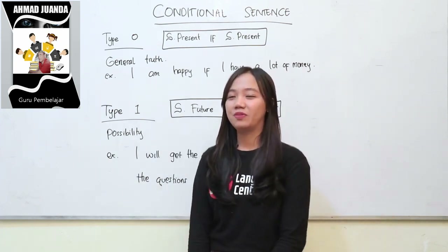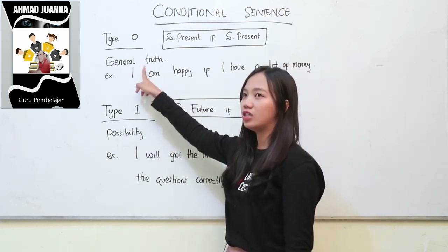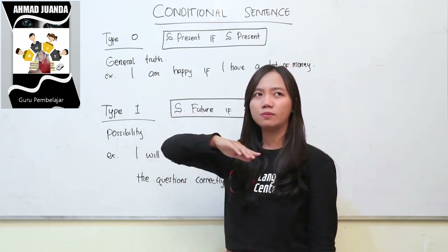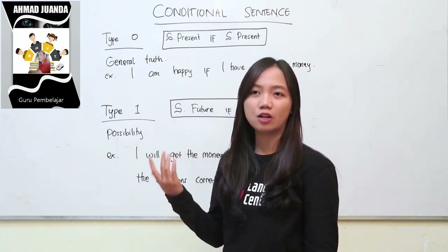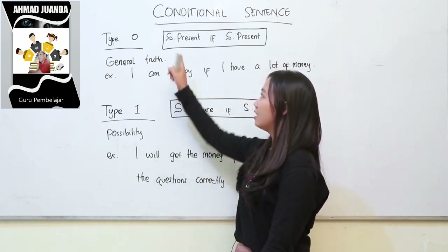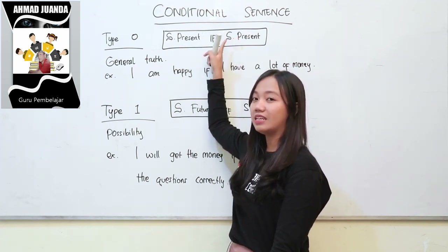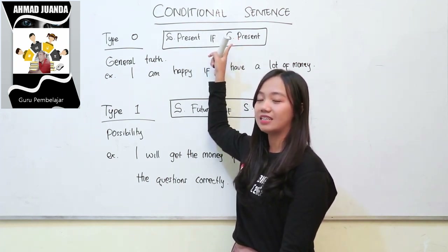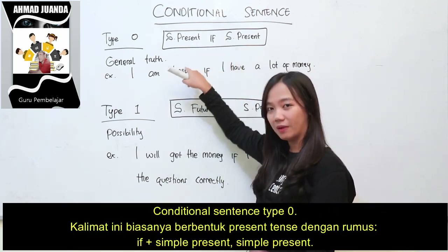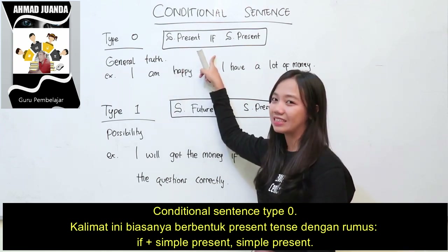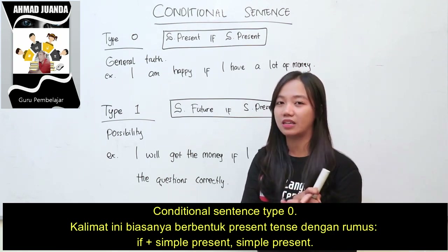Type 0. Kalau conditional sentence yang type 0, biasanya fungsinya dipakai untuk general facts atau untuk menjelaskan fakta-fakta — fakta-fakta penelitian atau kebenaran umum. Di sini dia memiliki rumus simple present, if simple present. Dia ini bisa dibalik, asalkan di tengahnya nanti diberikan tanda koma. Ingat ya, ketika di type 0 yang menyatakan kebenaran umum, dia harus pakai present semuanya.